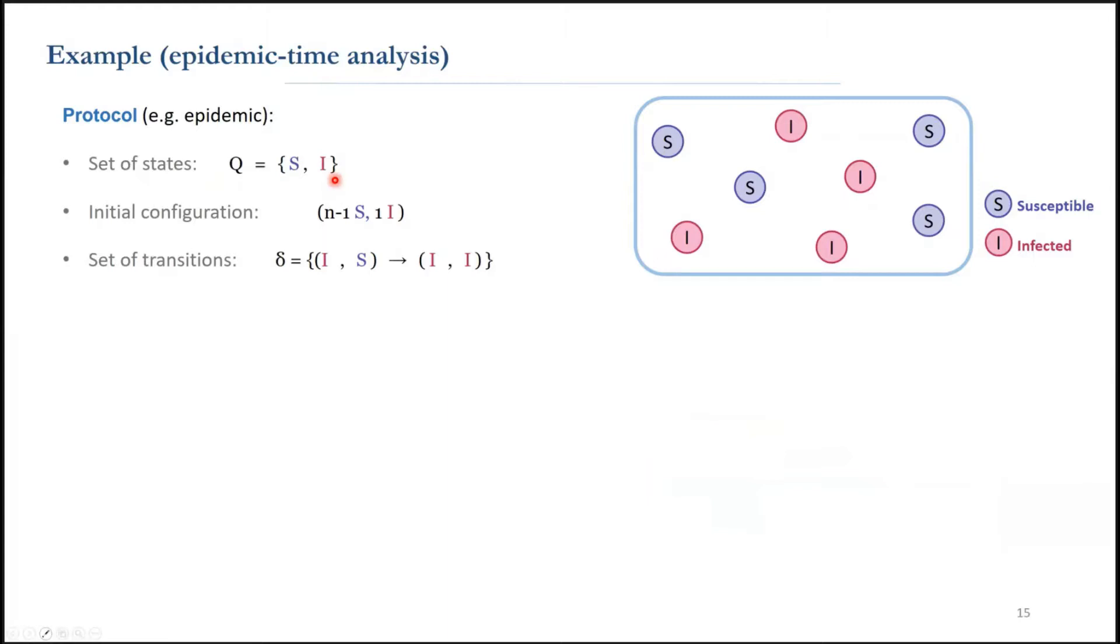We can calculate the expected number of interactions until all agents receive the epidemic. For example, when there are i agents infected, the probability of getting a new infected agent in the subsequent interaction is i times n minus i over n choose 2.